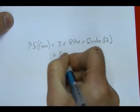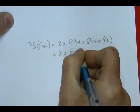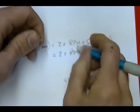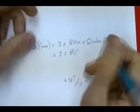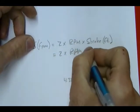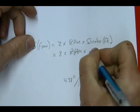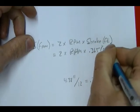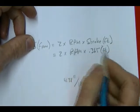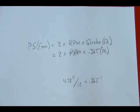So this becomes 2 times RPM times stroke, which is 0.365 feet. Now I just need to go out and find the RPM.